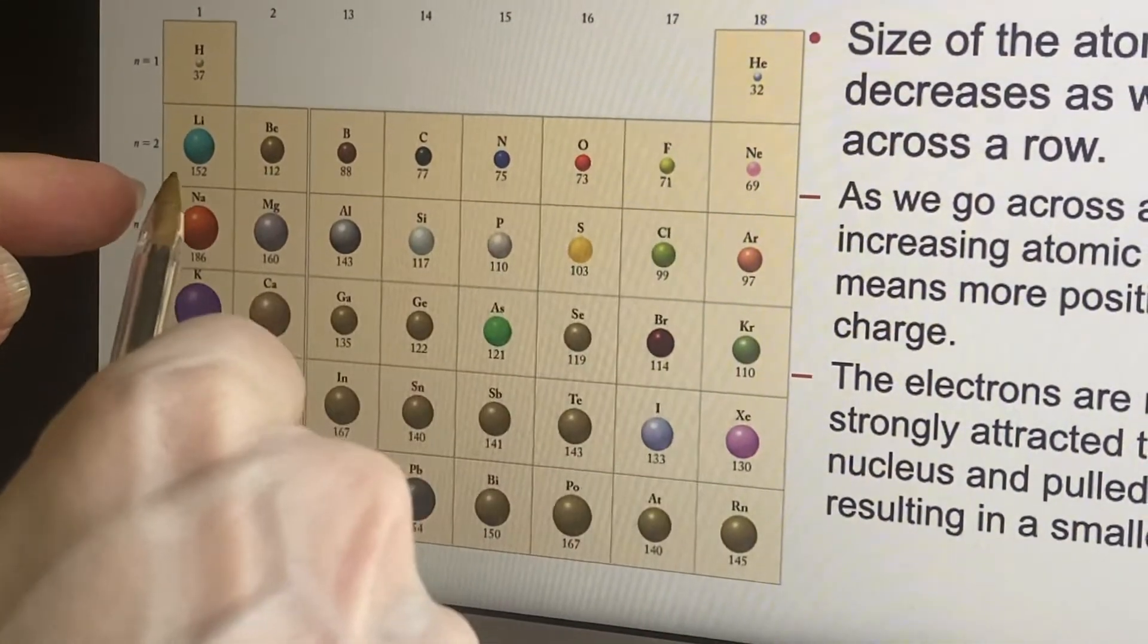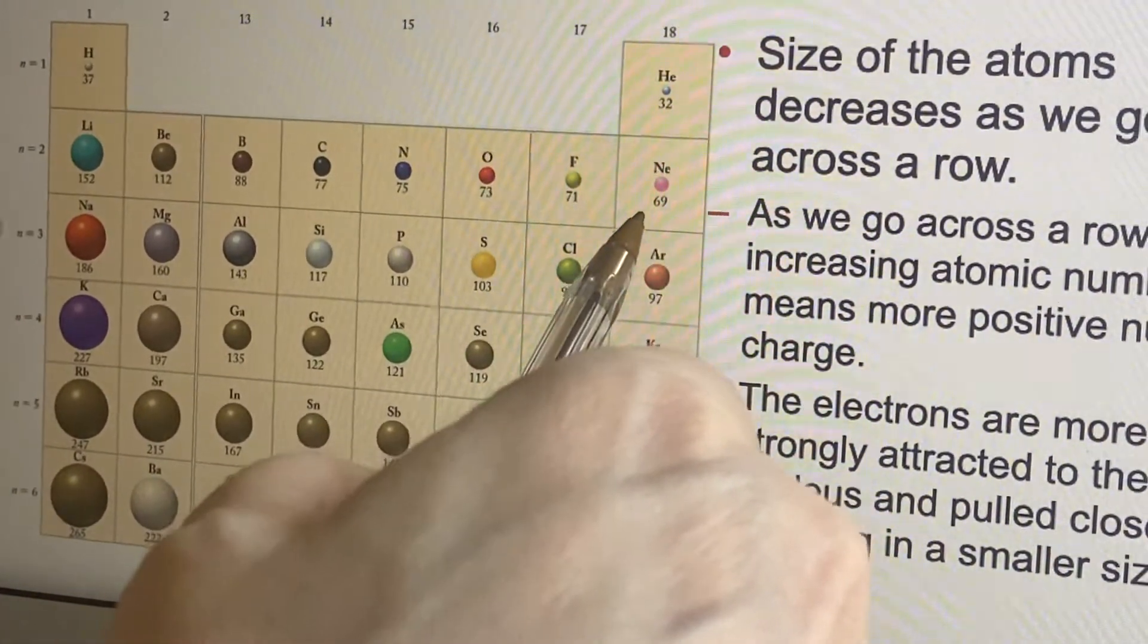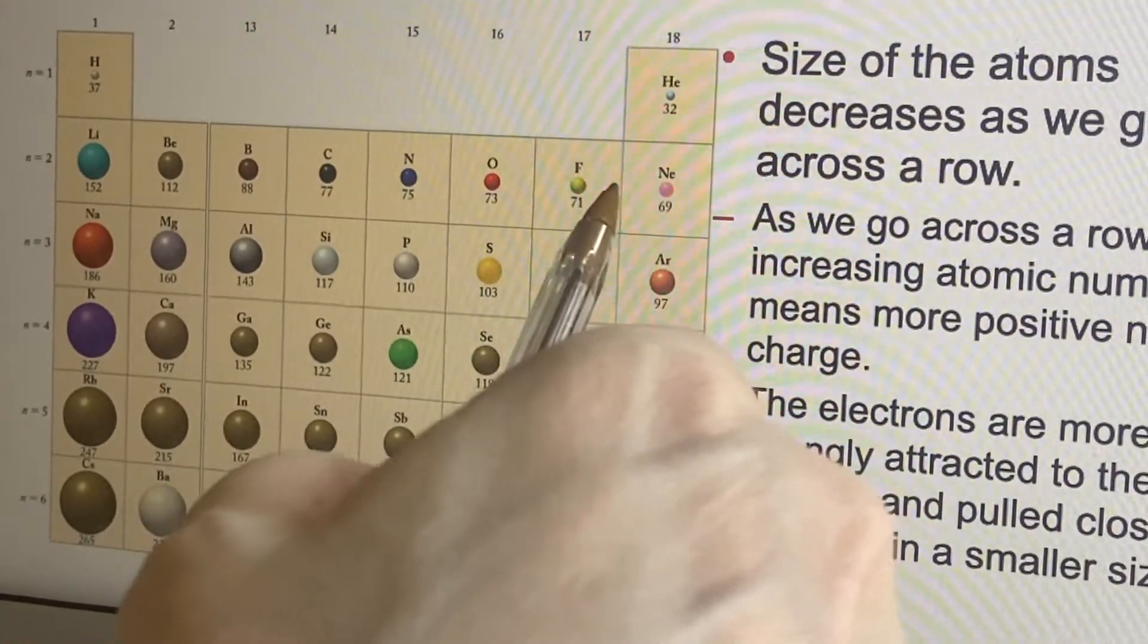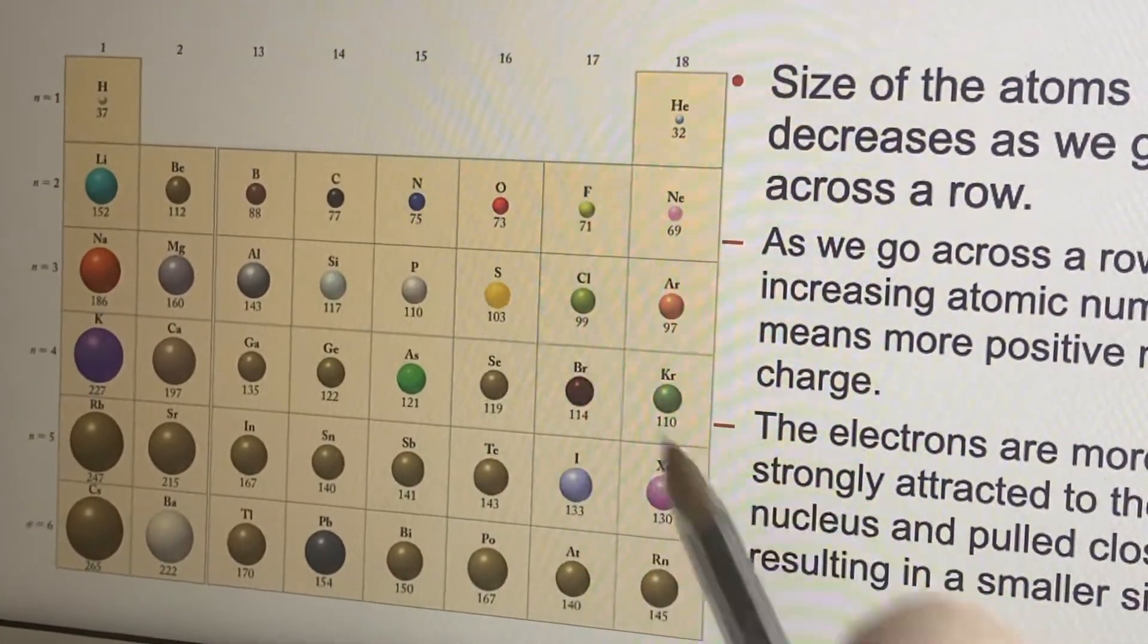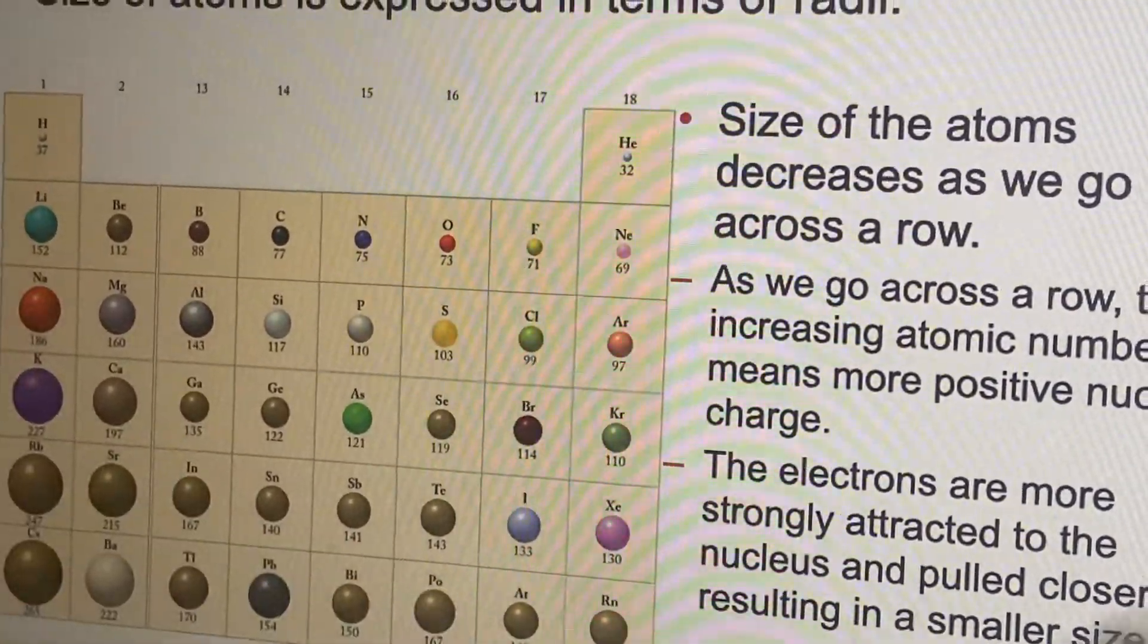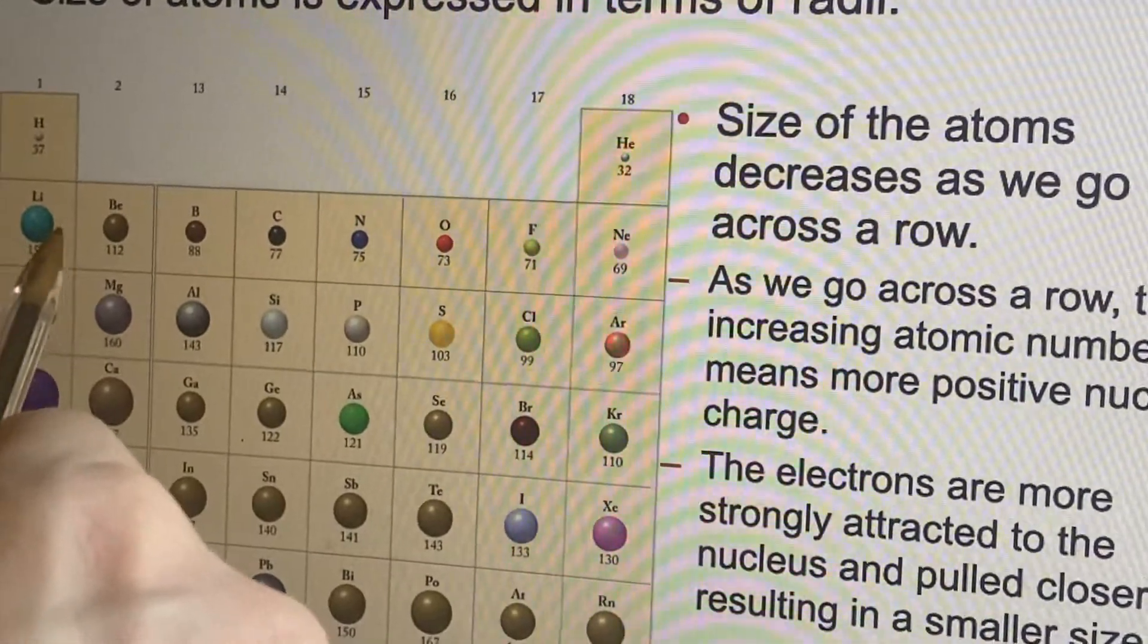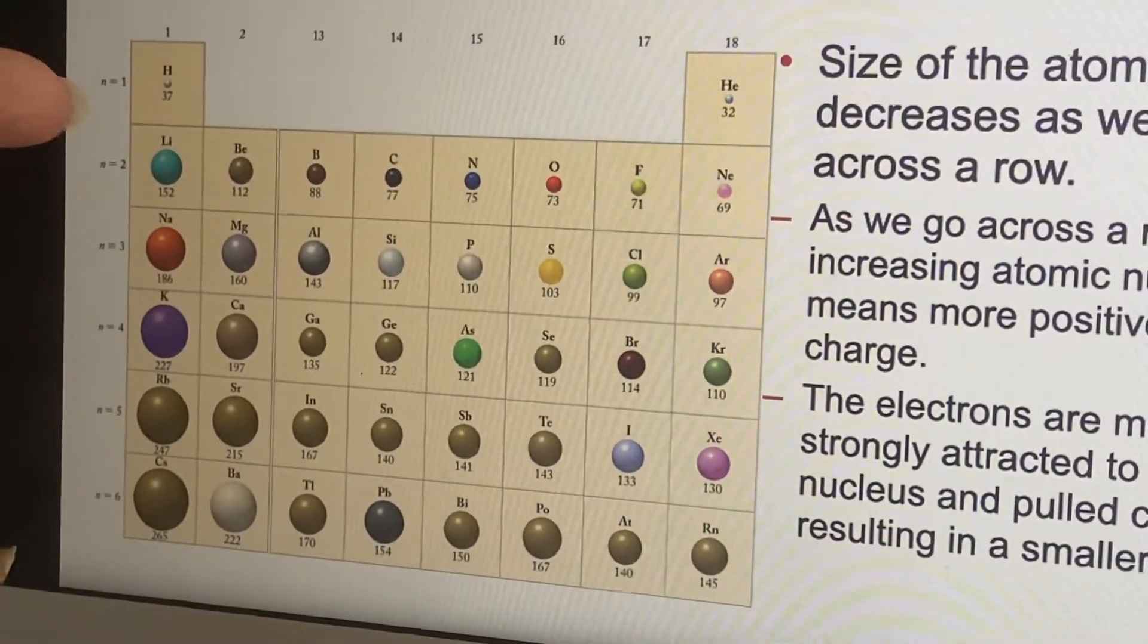Now here's the weird thing: as we go across, even though we're adding protons and electrons, they actually get smaller. Wait, what? This is where things start to get a little weird. It's not what you expected at all. You expected it's gonna get bigger as we add things.